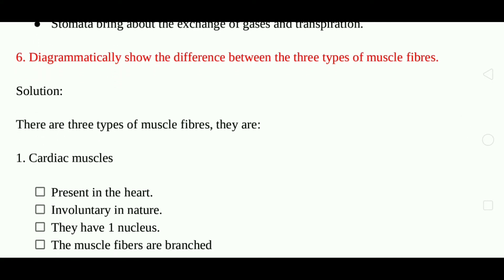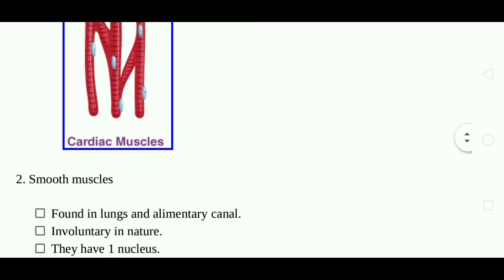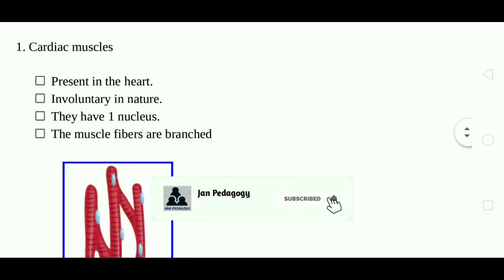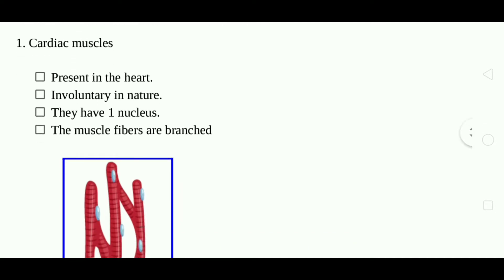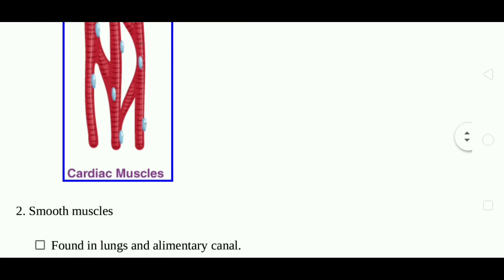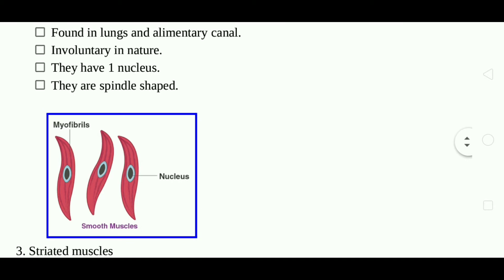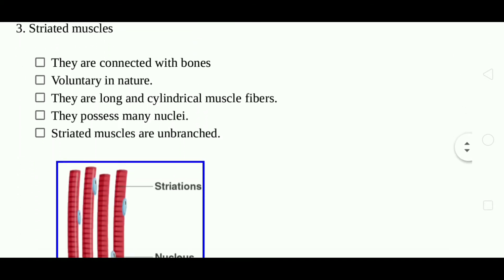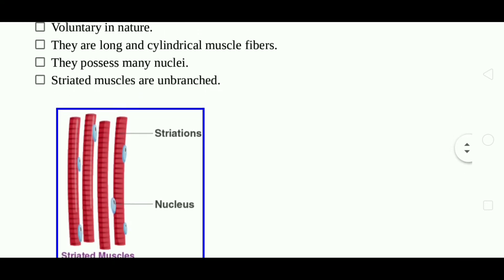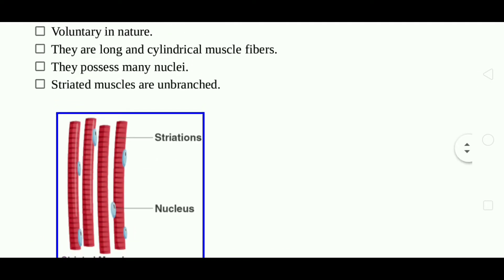Question 6: Show the difference between three types of muscle fiber. Answer: There are three types of muscle fiber — cardiac muscle, smooth muscle, and striated muscle. Cardiac muscle: present in the heart, involuntary in nature, has one nucleus, muscle fibers are branched. Smooth muscle: found in lungs and alimentary canal, involuntary in nature, has one nucleus, spindle shaped. Striated muscle: connected with bones, voluntary in nature, long and cylindrical muscle fiber, possesses many nuclei, and is unbranched.